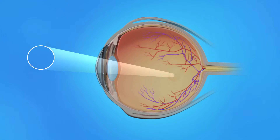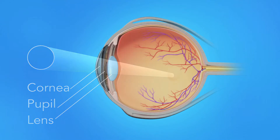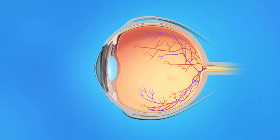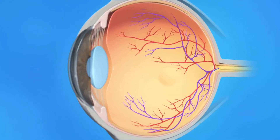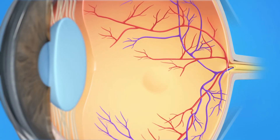Light rays enter the eye through the cornea, pupil, and lens. These light rays are focused on the retina, the light-sensitive tissue lining the back of the eye.